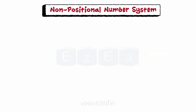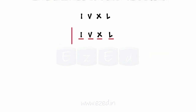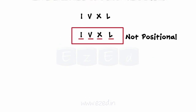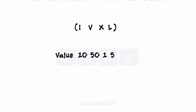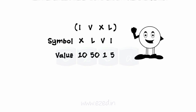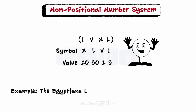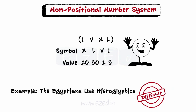In a non-positional number system, each number in each position does not have to be positional itself. It means that each value represents the same value regardless of its position. To find the value of a number, one has to count the number of symbols present in the number. For example, the Egyptians used hieroglyphics. It is very difficult to perform arithmetic operations with such a number system.